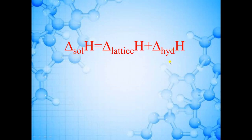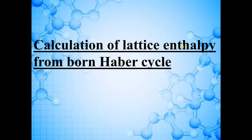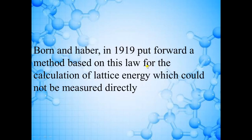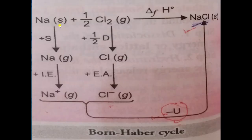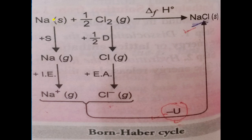We need these two energies to calculate enthalpy of solution. First, we will find lattice enthalpy using the Born-Haber cycle. Born and Haber in 1919 put forward a method. In the diagram, sodium atom in solid state and half of a Cl₂ molecule combine to form one mole of NaCl compound. The amount of energy released is known as enthalpy of formation, represented as ΔfH°.